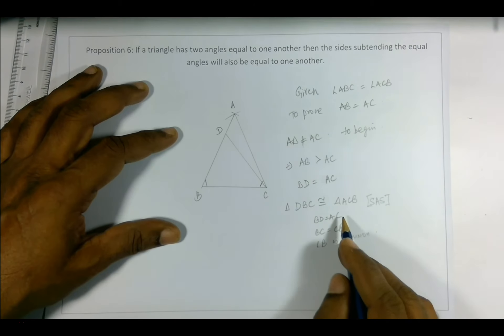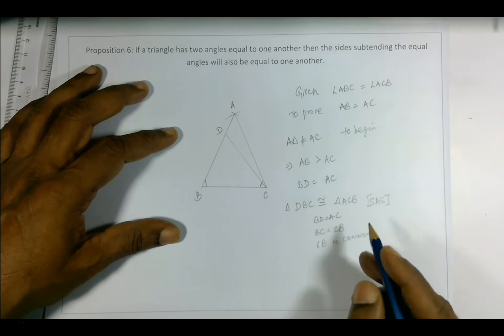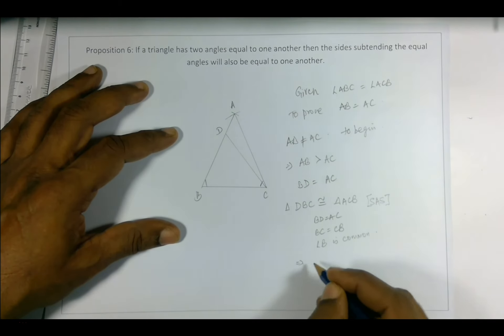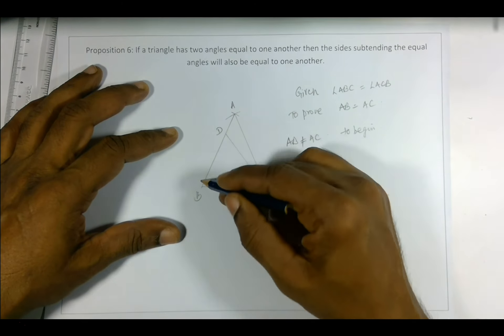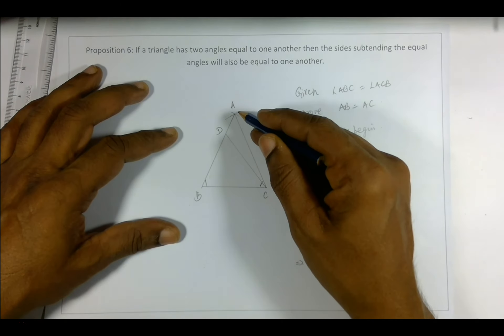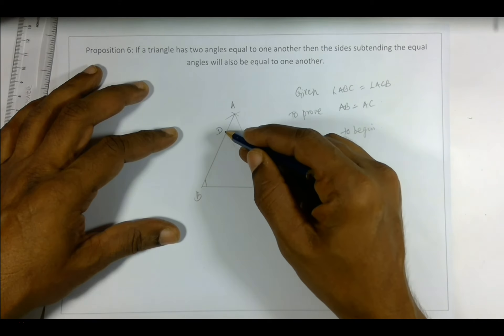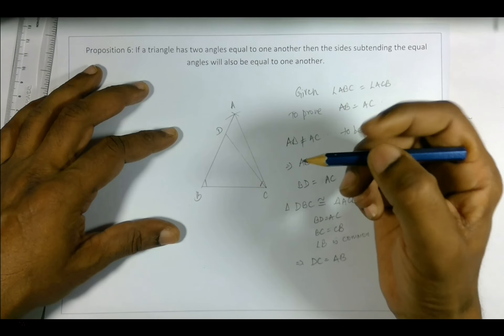Now if these two triangles are congruent, this implies that DC is equal to AB. Now that can't be. DC cannot be equal to AB.